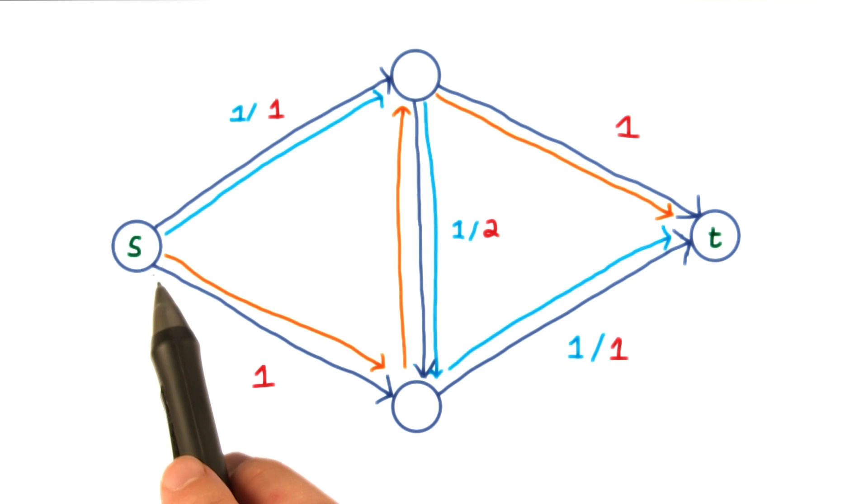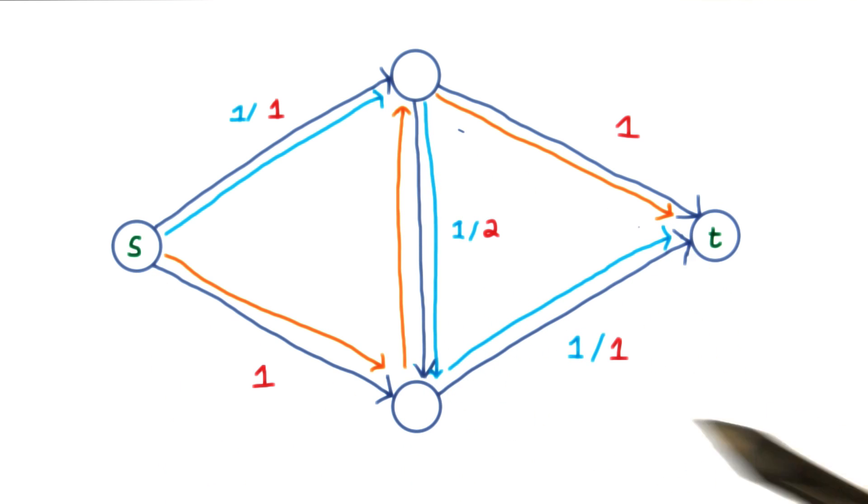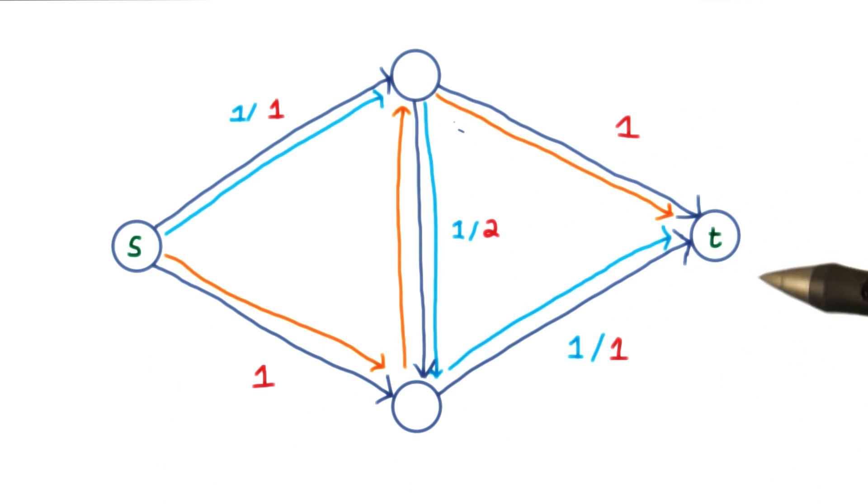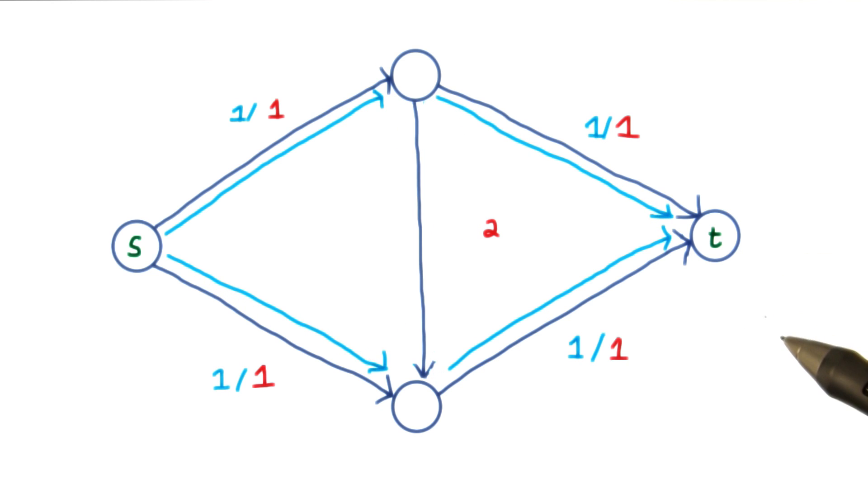This is equivalent to adding a flow that goes like this. Notice that the flows through the middle cancel out. By adding this flow to the original, I get the desired result.